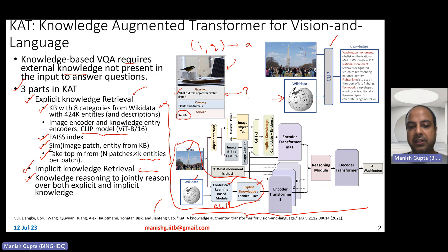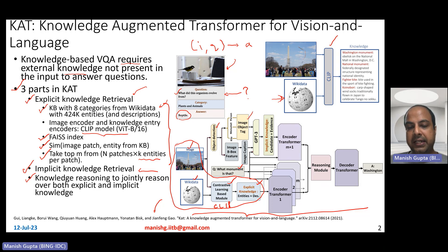What does implicit knowledge retrieval do? You take the image and the question. From the image you do object detection, which gives you object-related tags and various regions and their features. You use that to do image captioning. This image captioning, object-related tags, and the question are combined and given to a GPT-3 model so as to compute implicit knowledge.